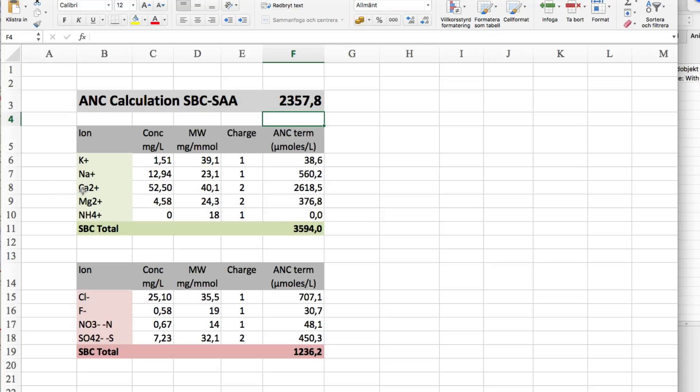However, if the calcium ion acts not as a cation to strong base, but as a cation to weak base, we should simply take that away from the calculation. And we end up with an ANC of minus 260.6 micromoles per liter.